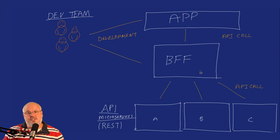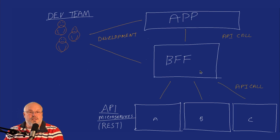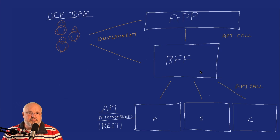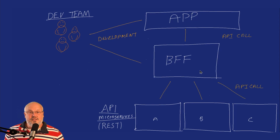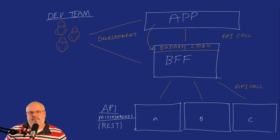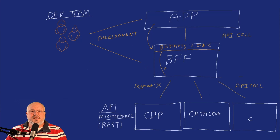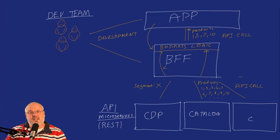Usually the team that builds the front-end also owns the BFF. This gives the teams far more autonomy to optimize the communications between their front-end application and the microservices layer. For instance, they could group together several API requests into one single BFF call, thereby reducing the under-fetching problem. This autonomy also gives front-end developers far more flexibility — for instance, they can add business logic, such as looking up a segment in one microservice and using that segment to filter data returned from a different microservice, allowing you to personalize the UI.